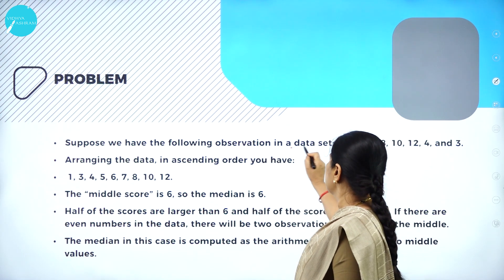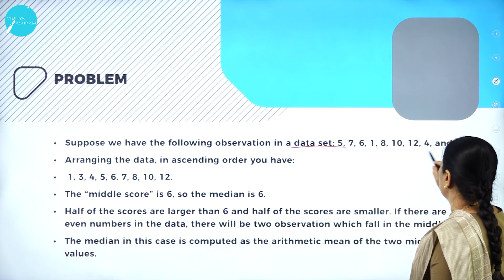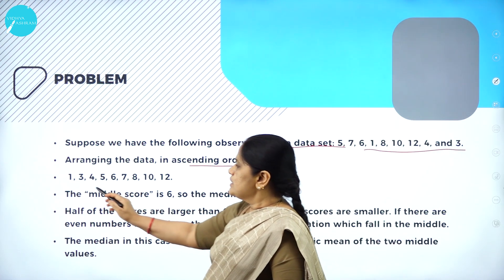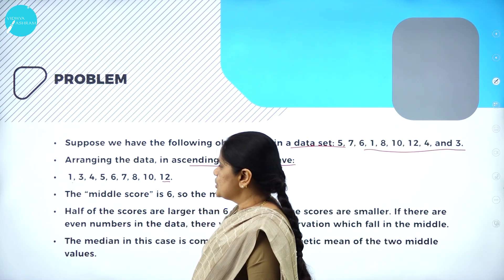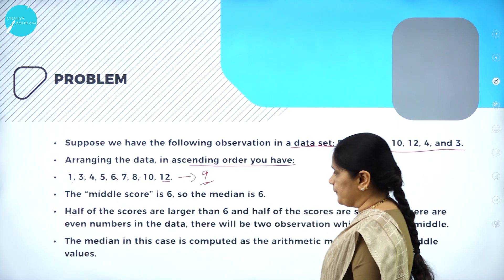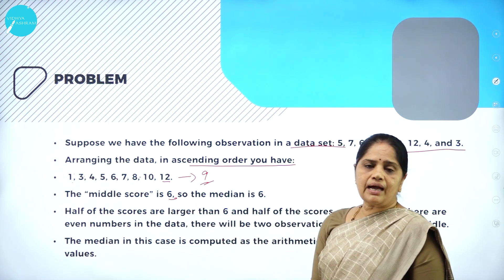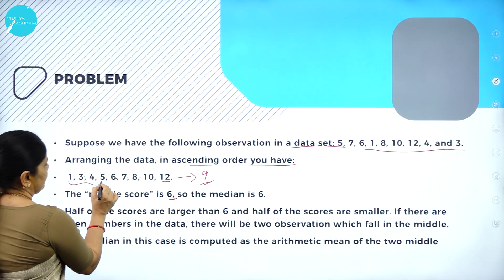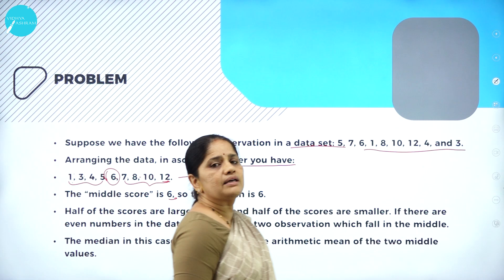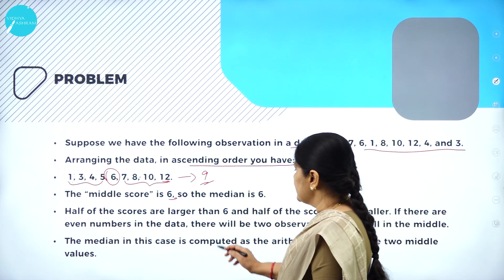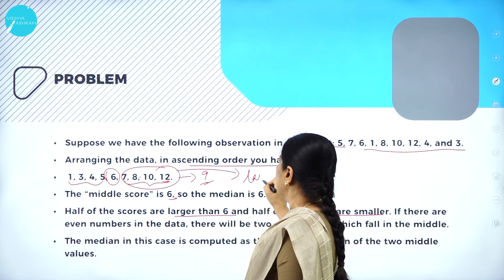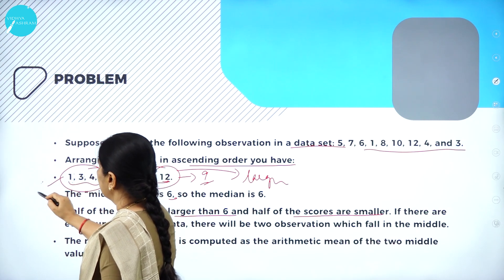Suppose we have the following observations in a data set: 5, 7, 6, 1, 8, 10, 12, 4 and 3. This is the data given to find out the median. Arranging in ascending order: 1, 2, 3, 4, 5, 6, 7, 8, 9 — we have 9 values. The middle score is 6. We have 9 values, so we take the first 4 values, delete them, and the middlemost value is 6. Therefore, the median of the given data is 6. Half of the scores are larger than 6 and half are smaller.